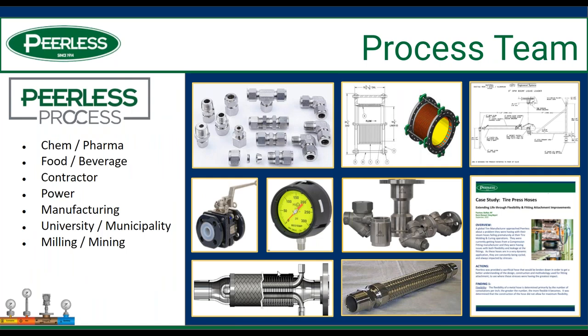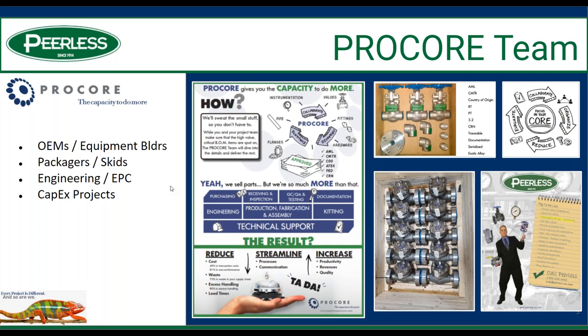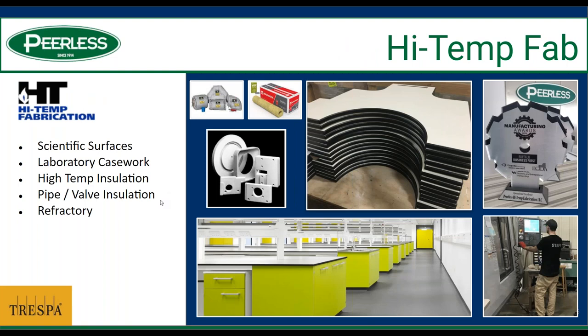We operate under three distinct groups. Our process team works in the plant environment in MRO-type systems — chemical, pharmaceutical, food and beverage, etc. The Pro Core team was carved out about nine years ago to focus specifically on the unique requirements of equipment builders and OEMs, featuring global concerns around area requirements and high-spec projects.